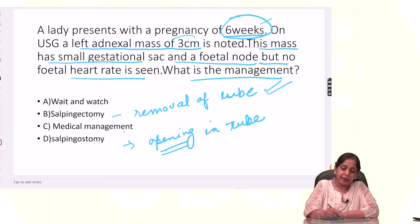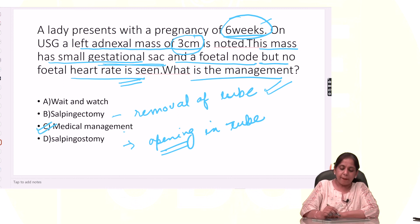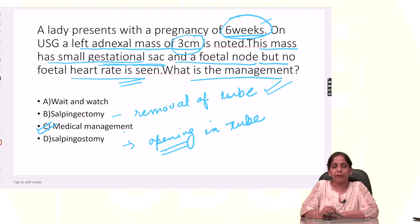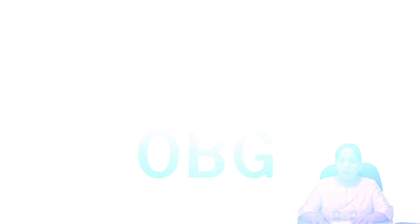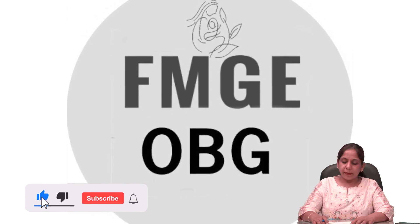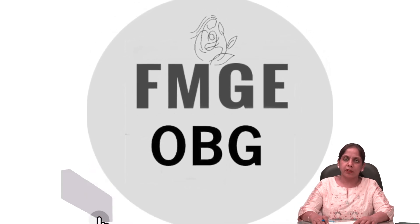Coming back to the case: a 3 cm adnexal mass with a small gestational sac and absent cardiac activity — in this condition, treatment is medical management. Because mass is 3 cm, sac is small, and cardiac activity is absent — conditions are favorable for medical management. That's all for tubal ectopic pregnancy. I hope you like this video. Please subscribe so that all FMGE aspirants can benefit. Thank you.